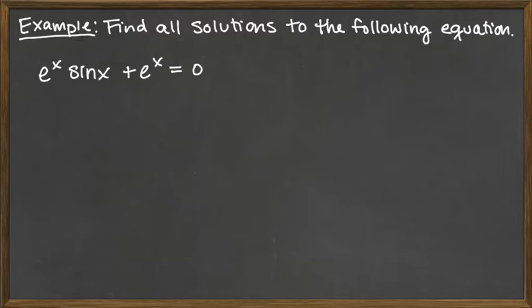Once we have it completely factored, we can set each factor equal to 0 to solve, and that's using the zero product property. If you have the product of things equal to 0, one of those factors would have to be equal to 0.